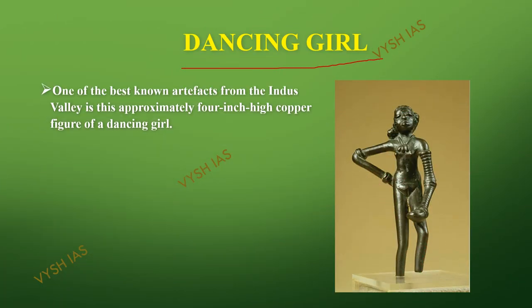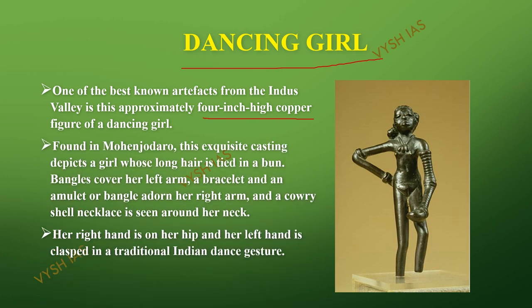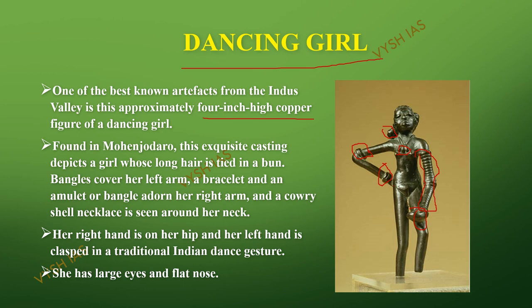The next important one is the statue of a dancing girl. She has long hands and is wearing bangles. One armlet and one bangle are on her right hand, while her left hand is full of bangles. She also has a necklace. Since the position she stands in is a dancing pose, this statue is named the Dancing Girl statue. She has large eyes and a flat nose.